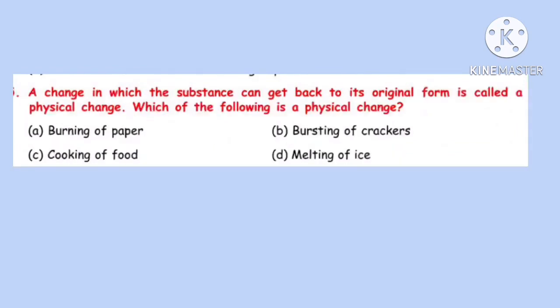Question 25. A change in which the substance can get back to its original form is called a physical change. Which of the following is a physical change? Options A, B, and C are chemical changes, meaning the original form of the substance cannot be retained. Hence the correct option is D: Melting of ice. Melting of ice involves a change in state of water from solid to liquid and, since it involves a change in state without forming any new substance, it is a physical change.